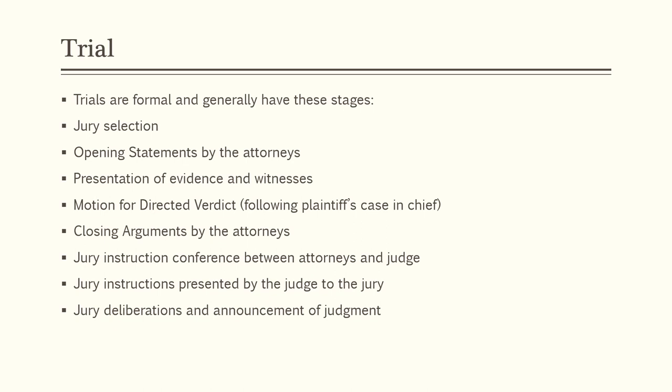Sometimes the jury can't render a verdict — that's called a hung jury — and the judge has to declare a mistrial. That's relatively rare in civil cases, though it does happen more often in criminal cases when the state can't prove their case and there may be one or two holdouts. But once the jury decides on a verdict, they come in, announce it, and the court enters judgment.